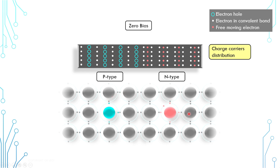Now, these charge carriers can move around, and at one point or another, a red electron is bound to combine with an electron hole. When a red electron combines with an electron hole, it can no longer move freely. Technically, it becomes a white electron. Effectively, on a block level, red electrons move into the P region and combine with electron holes. As a result, the electron holes disappear and the red electrons become white electrons.